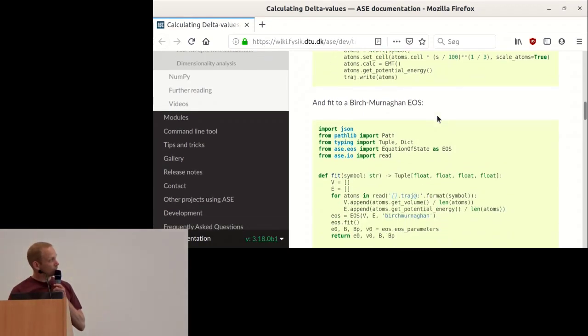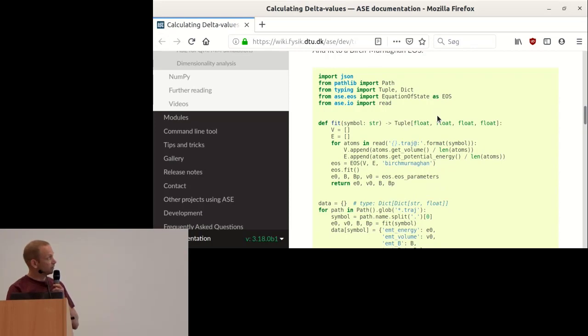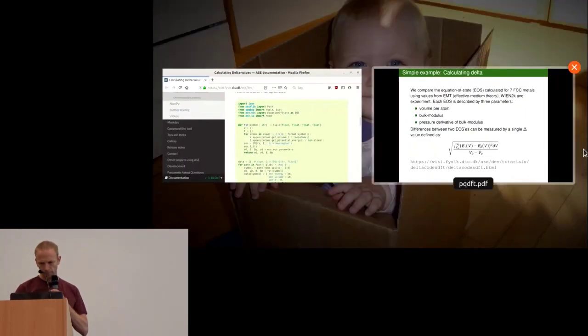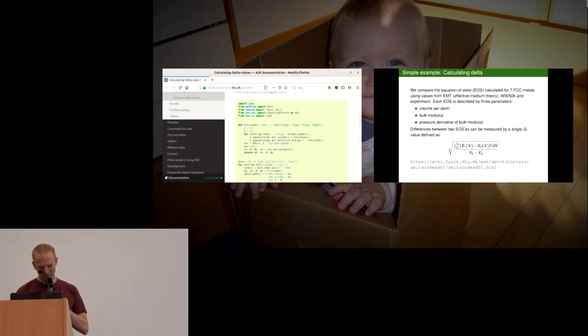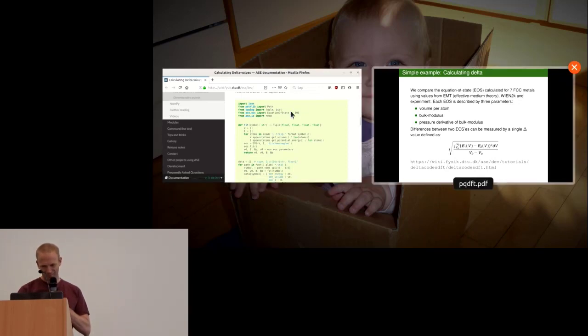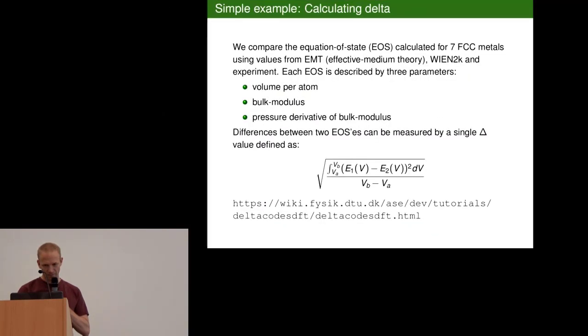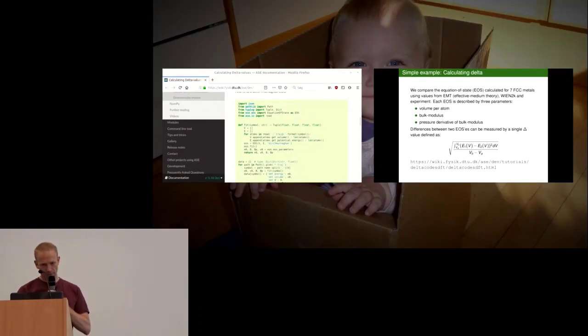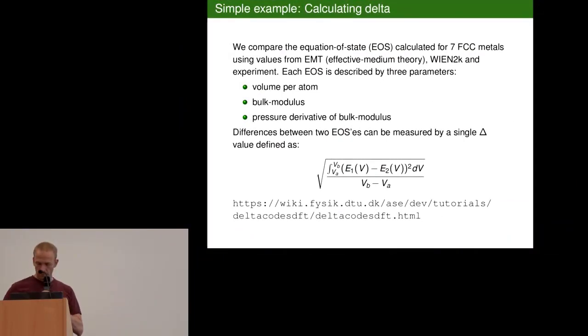Then here we can see how to later read in the trajectory, pull out the volumes and energies, create this equation of state object, do the fitting, and pull out the parameters. And then here you can write the results to a file. As you can see, ASE is really low level tools that you can build on top of.